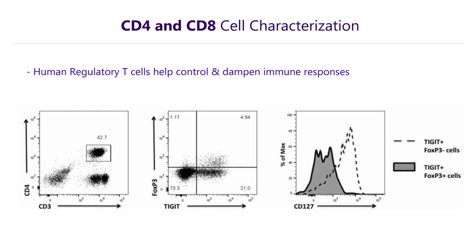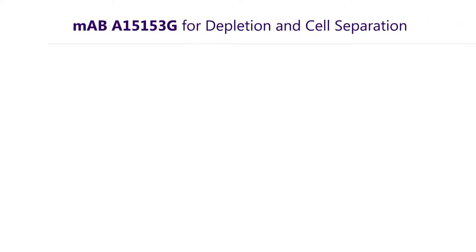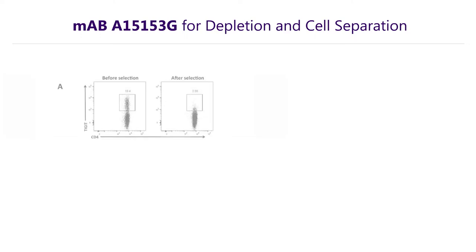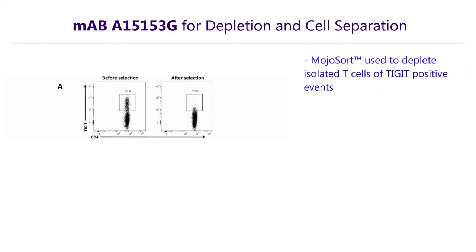We also tested additional applications for clone A15. Specifically, we depleted isolated T-cells of any TIGIT positive events using our magnetic cell separation system, or MojoSort. Clone A15 was biotinylated and then attached to streptavidin nanobeads and separated out with our magnet.